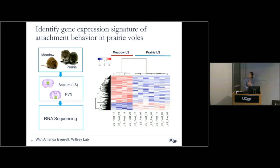Looking at the gene expression signature in the lateral septum between meadow voles and prairie voles, we see hundreds — maybe a thousand — genes that are differentially expressed. Upregulated genes are indicated in red and downregulated in blue. This is a huge list, but it starts to give us an idea of what this difference might be.